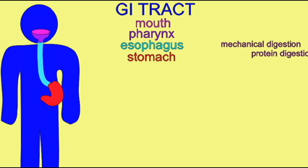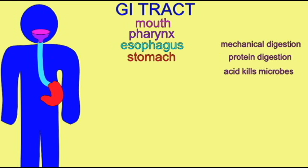Mechanical digestion is the mixing of food with digestive juices. Mechanical digestion also occurs in the mouth. When food leaves the stomach, it is in the form of chyme, a semi-solid mix of the ingested food and gastric juices.